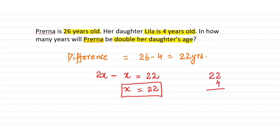years old after 18 years. So that means Prerna will be double her daughter's age after 18 years.